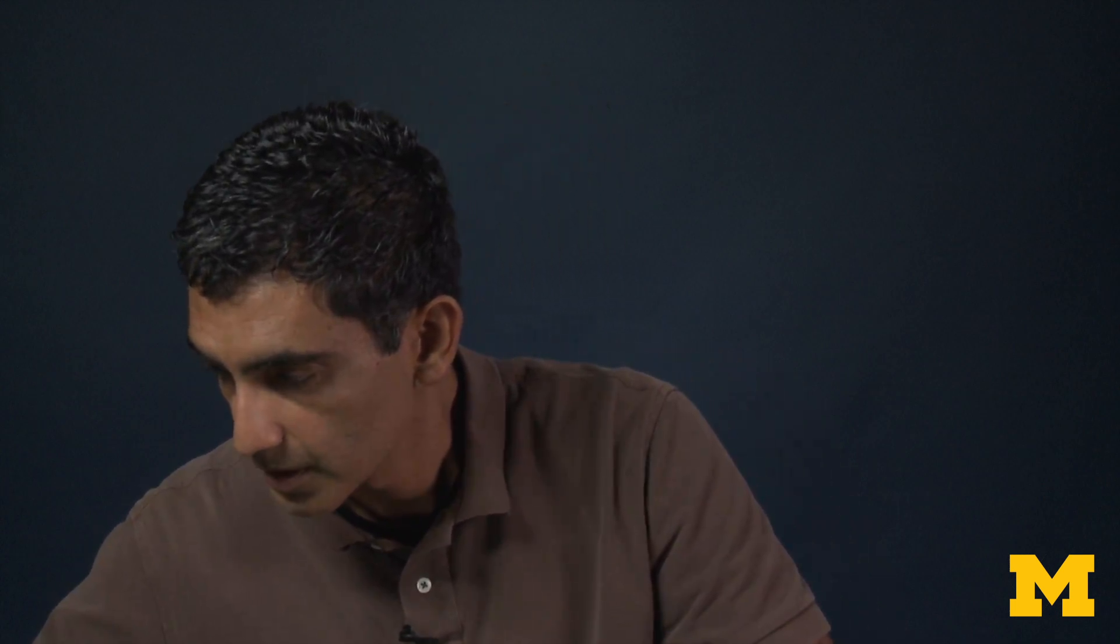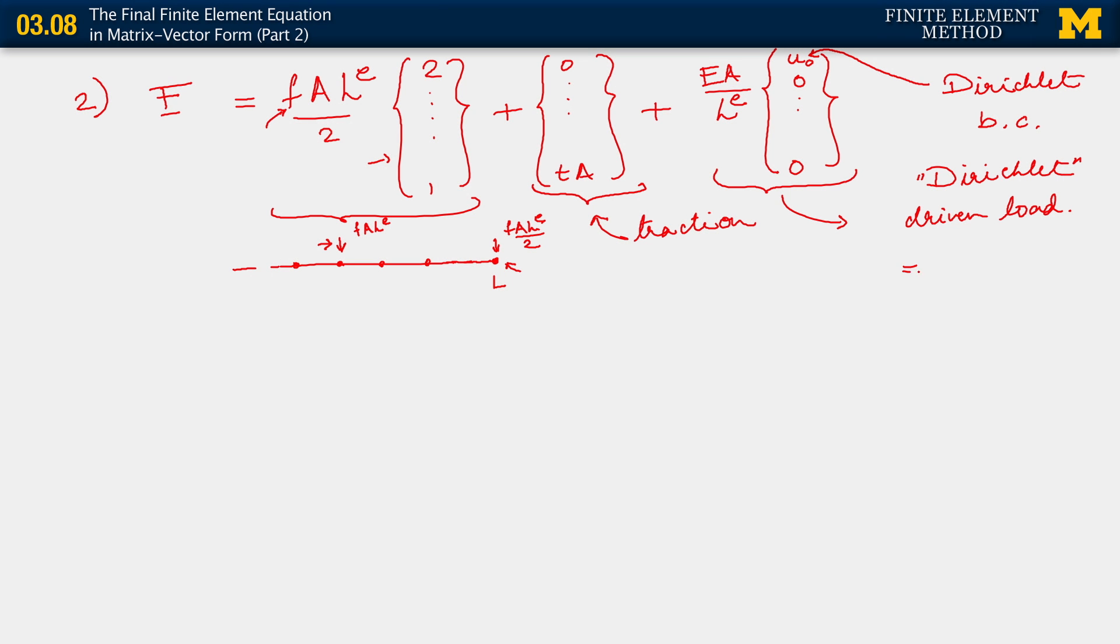So let me just say one more thing here. This Dirichlet driven load is equal to zero in the considered case. So there we have it, the various contributions to the effective forcing on the problem coming from the distributed forcing function, from the traction, the Neumann boundary condition, and finally, the effect of the Dirichlet boundary condition as well.